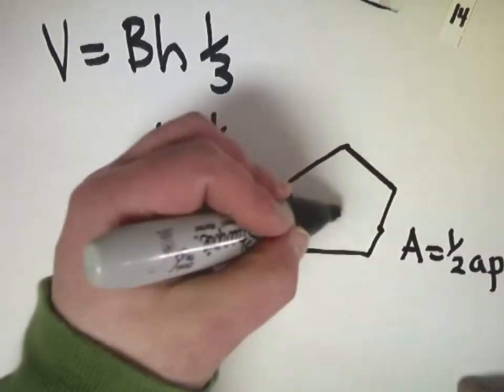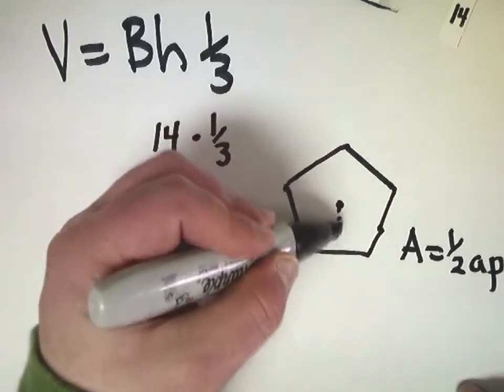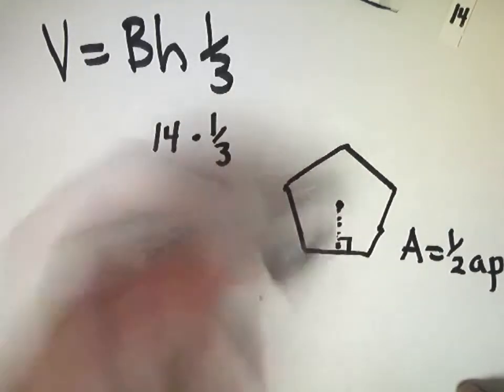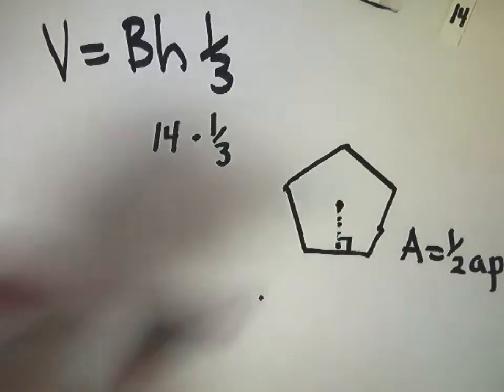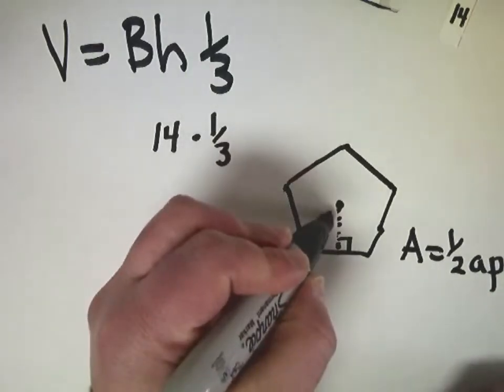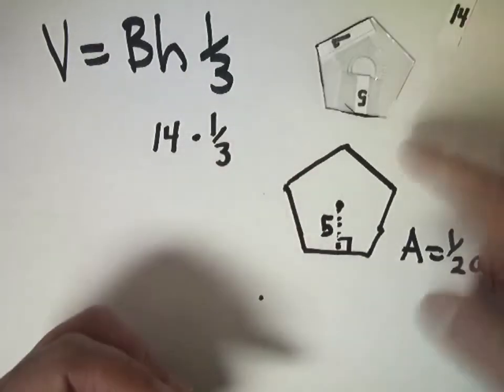Apothem would be the distance from the center of the figure that makes a nice right-angle intersection with this line, so it perpendicularly bisects it, more or less. So that value is five from my figure above.